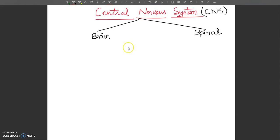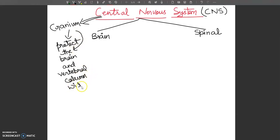The CNS is supported and protected by the skeleton. The cranium protects the brain, and the vertebral column protects the spinal cord.